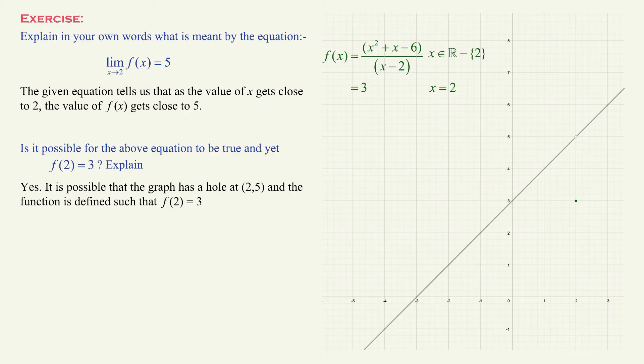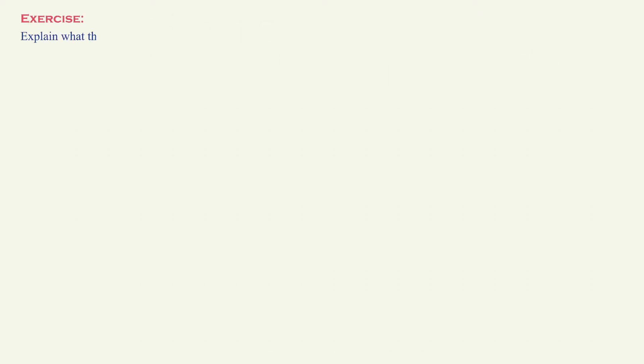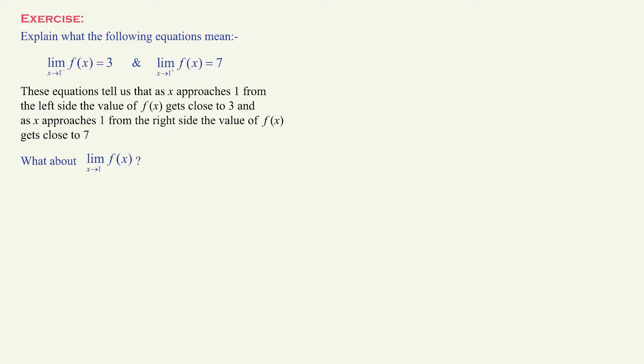I can show you the formal definition of a limit, but it looks scary with a couple extra variables like epsilon and delta. Moving on to the next problem: explain what the following equations mean. The limit of f of x as x approaches 1 from the left side is 3.